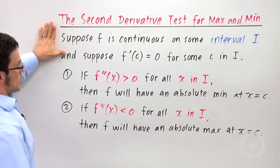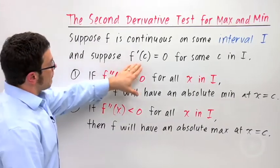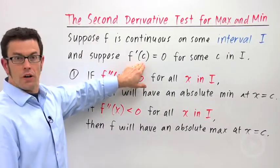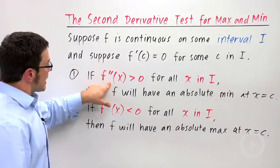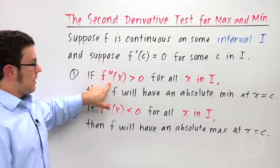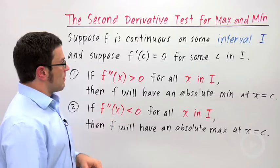You start with a continuous function on some interval I, that's its domain, and suppose f prime of c equals 0, that's its one critical point. If the second derivative is always positive on that domain, then f will have an absolute minimum.